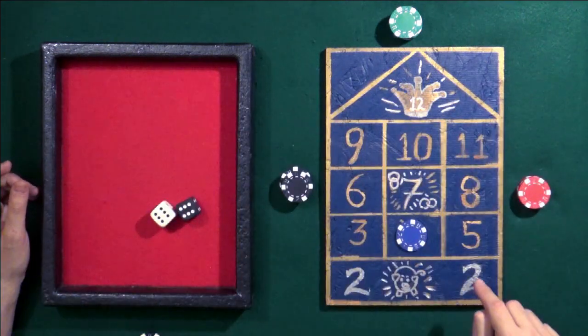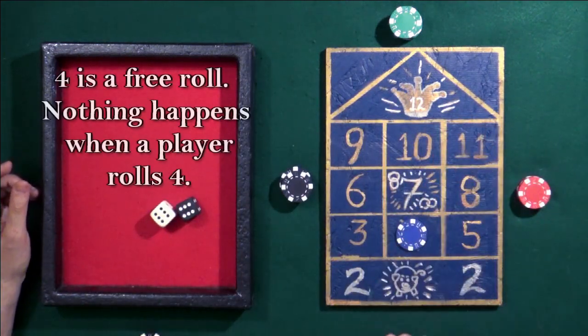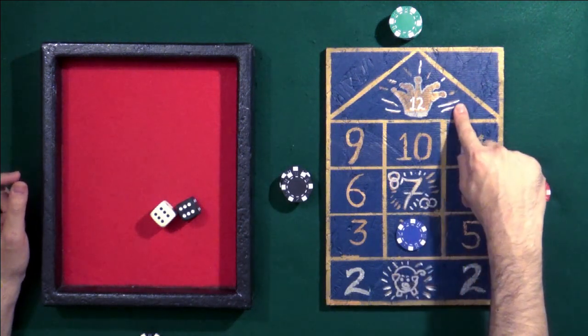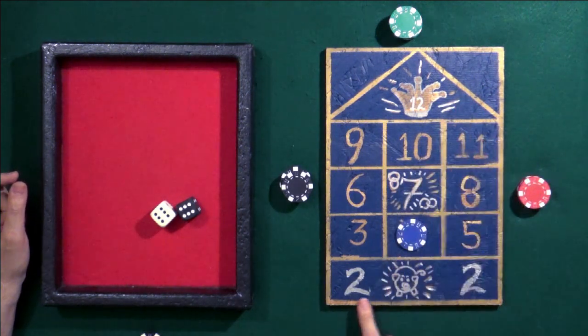But here's the basic layout. Two through twelve, excluding the four, and the seven is a special square. Seven is called the marriage square. This is called the king or queen, and this is called the pig.